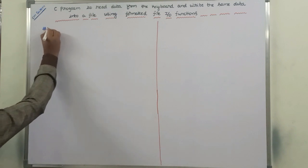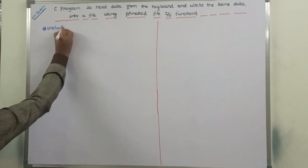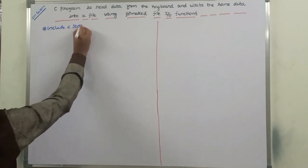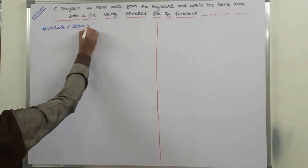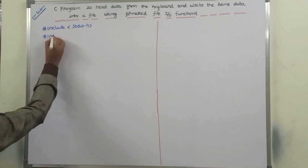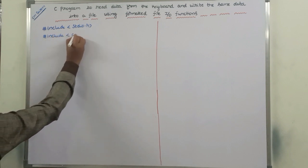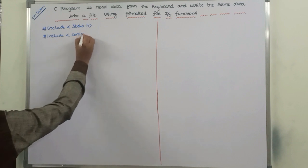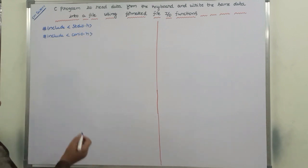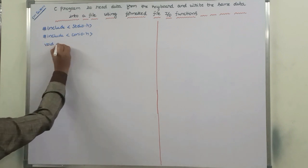Every program starts with two header files. The first header file is #include stdio.h and the second is #include conio.h. After header files, we have to write the main function: void main.